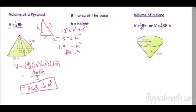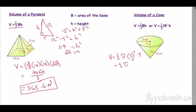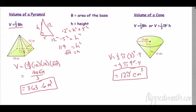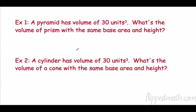The volume of a cone is one-third the cylinder formula: one-third pi r squared h. So the volume of this cone is one-third times pi times 3 squared times 4 — that's one-third times pi times 9 times 4, giving 12 pi cubic centimeters.